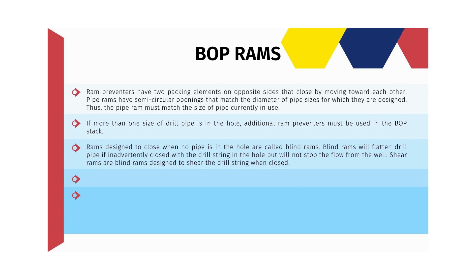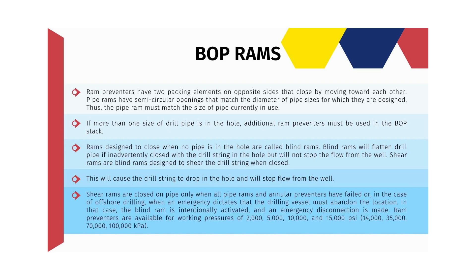Shear rams are blind rams designed to shear the drill string when closed, causing the drill string to drop in the hole and stopping flow from the well. Shear rams are closed on pipe only when all pipe rams and annular preventers have failed, or in the case of offshore drilling, when an emergency dictates that the drilling vessel must abandon the location — in that case the blind ram is intentionally activated and an emergency disconnection is made. Ram preventers are available for working pressures of 2,000, 5,000, 10,000, and 15,000 psi.